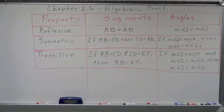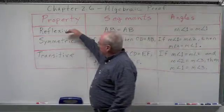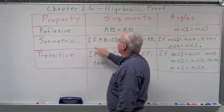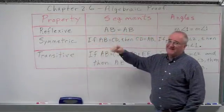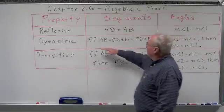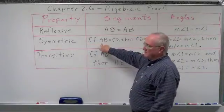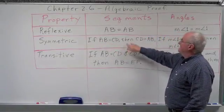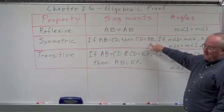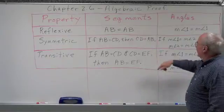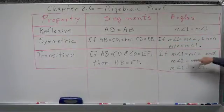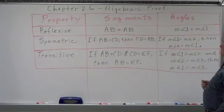Now, symmetric — remember, one, two, three. This has two entities. Notice these are also expressed in if-then conditional statements, so we're using all that logic that we started with. If the measurement of segment AB equals the measurement of segment CD, then the measurement of segment CD equals the measurement of segment AB. In angles: if the measurement of angle 1 equals the measurement of angle 2, then the measurement of angle 2 equals the measurement of angle 1.